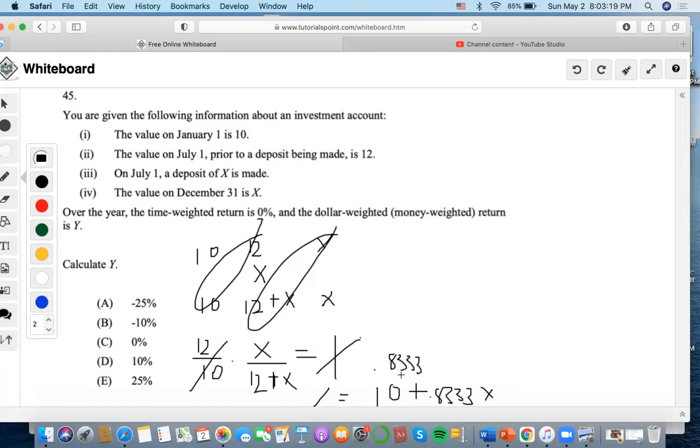We're going to set this equal to X. And then now we're going to do 1 minus 0.8333 to find that 0.1667X.